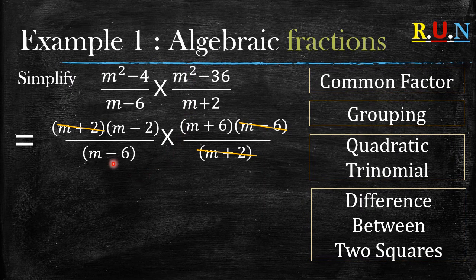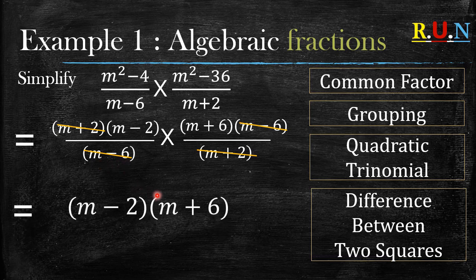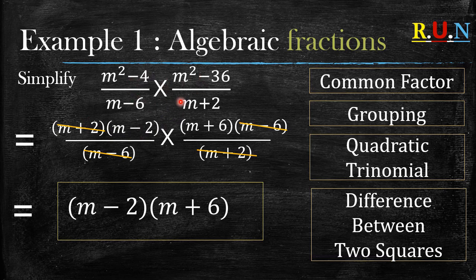So you cancel out this m minus 6 as well, and just like that you have simplified this algebraic fraction that involves multiplication.